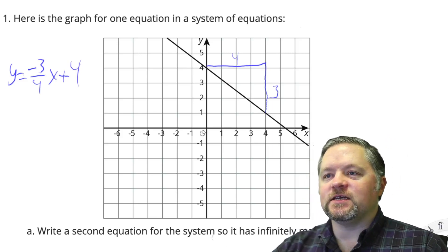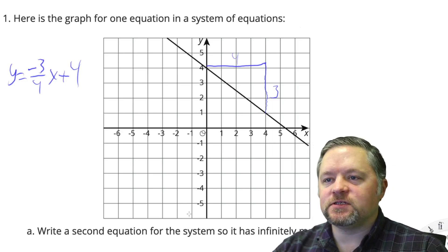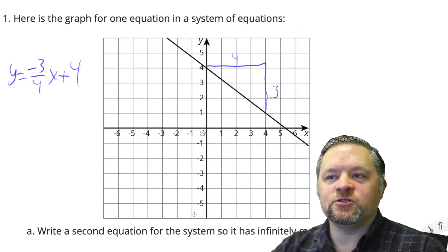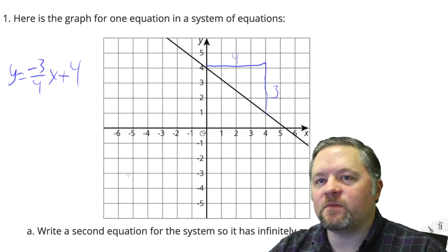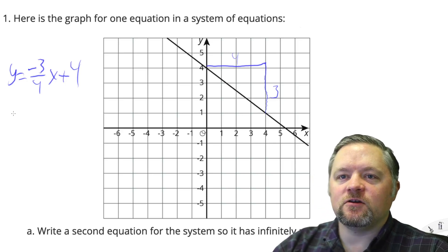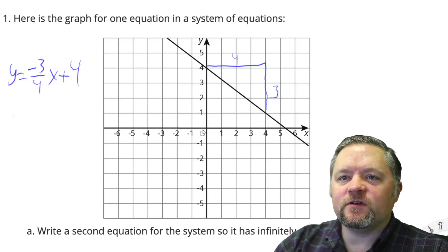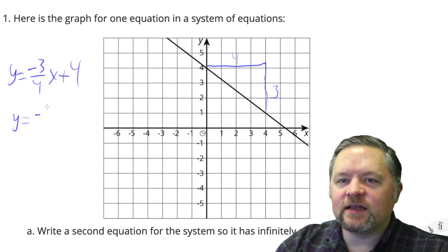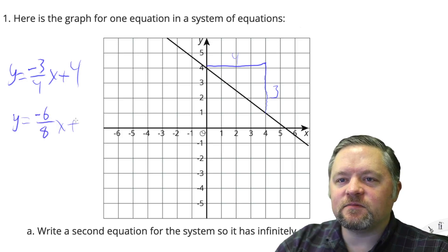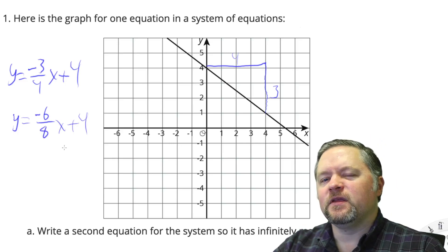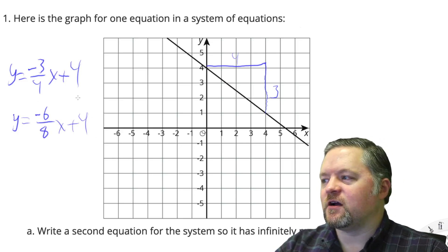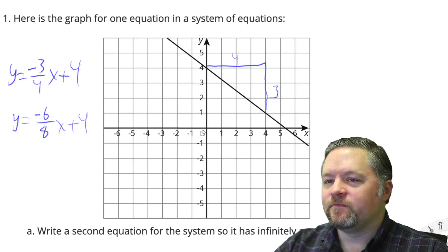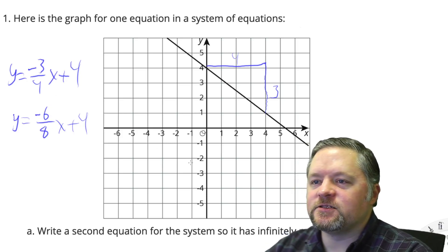For the second equation so it has infinitely many solutions — infinitely many solutions means the two lines are right on top of each other. Let's mix it up a little bit: y equals negative 6/8x plus 4. Six eighths and three fourths are equivalent fractions, so it's the same line — infinitely many solutions.